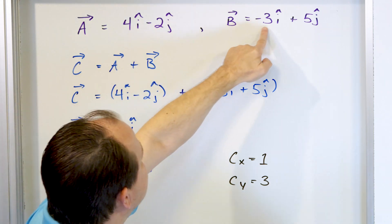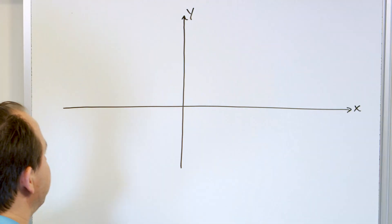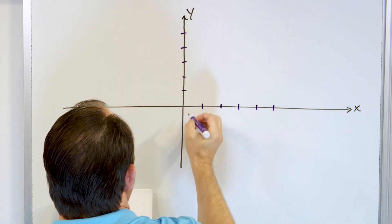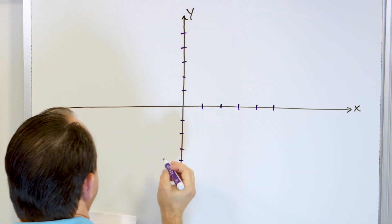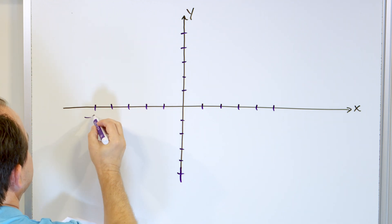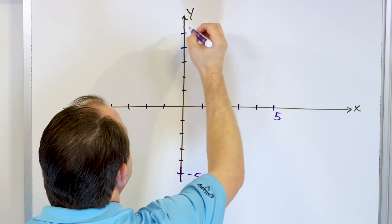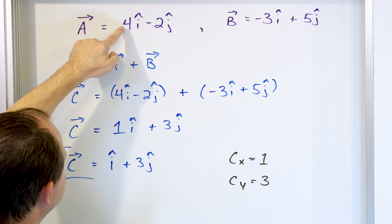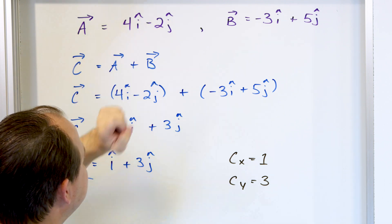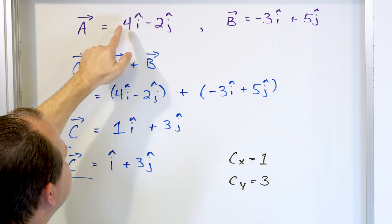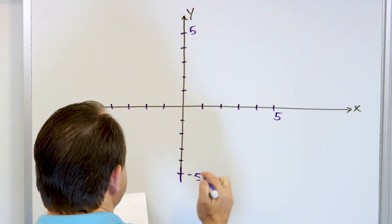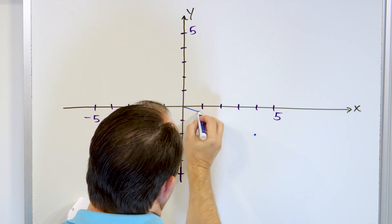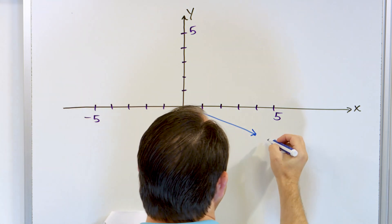All of these numbers — 4, 2, 3, 5, 1, 3 — are pretty small, so I'll mark the axes from negative 5 to positive 5 in both directions. For vector A, the x component is positive 4 units and the y component is negative 2 units. Positive 4 for x and negative 2 for j means the tip of this vector points at coordinates (4, -2), so I draw a straight line vector to that point. This is vector A: 4i minus 2j.